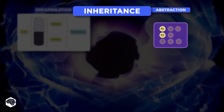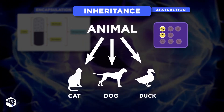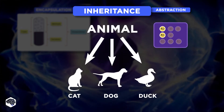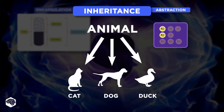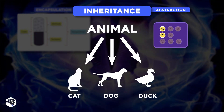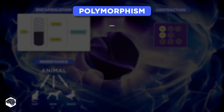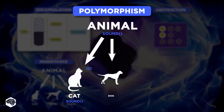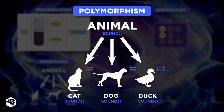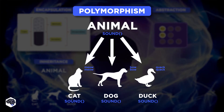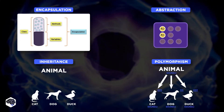Inheritance is used by programmers when working with several objects that have a lot in common, but still have unique logic. And polymorphism means many forms, and it occurs when we have many classes that are related to each other by inheritance.